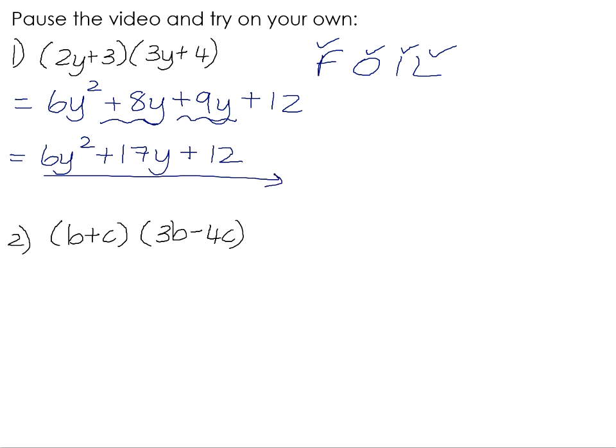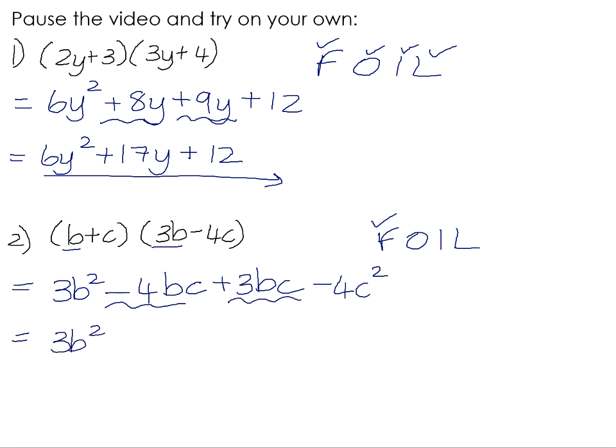And then in number 2, we use FOIL to help us make sure that we multiply everything in the first bracket by everything in the second bracket. The firsts, b times 3b is 3b squared. The outers, b times negative 4c. A positive times a negative is a negative, and b times 4c is 4bc. Remember, when you have more than one variable in a term, it's advisable to write them in alphabetical order. Positive c times 3b is positive 3bc. And positive c times negative 4c is negative 4c squared. We have like terms in the middle, bc and bc. So negative 4 add 3 is negative 1. So it'll be negative bc minus 4c squared.